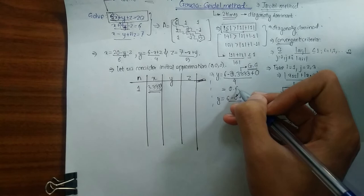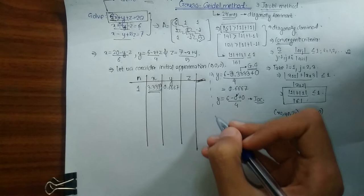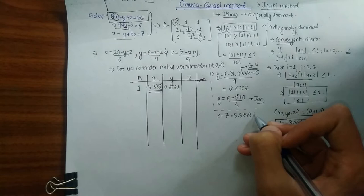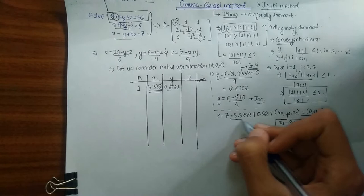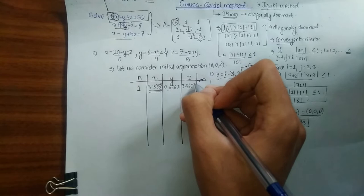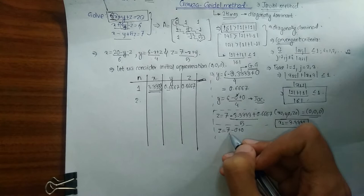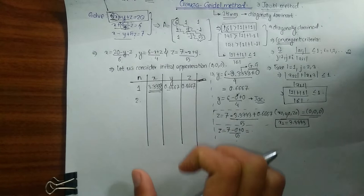Now to calculate z₁, we use the latest x₁ = 3.3333 and latest y₁ = 0.6667: z₁ = (7 − 3.3333 + 0.6667) / 5 = 0.8667. In the Jacobi method, we would have used x = 0 and y = 0, giving (7 − 0 + 0) / 5 — that is the difference between Gauss-Seidel and Jacobi. We continue iterations until our results converge.